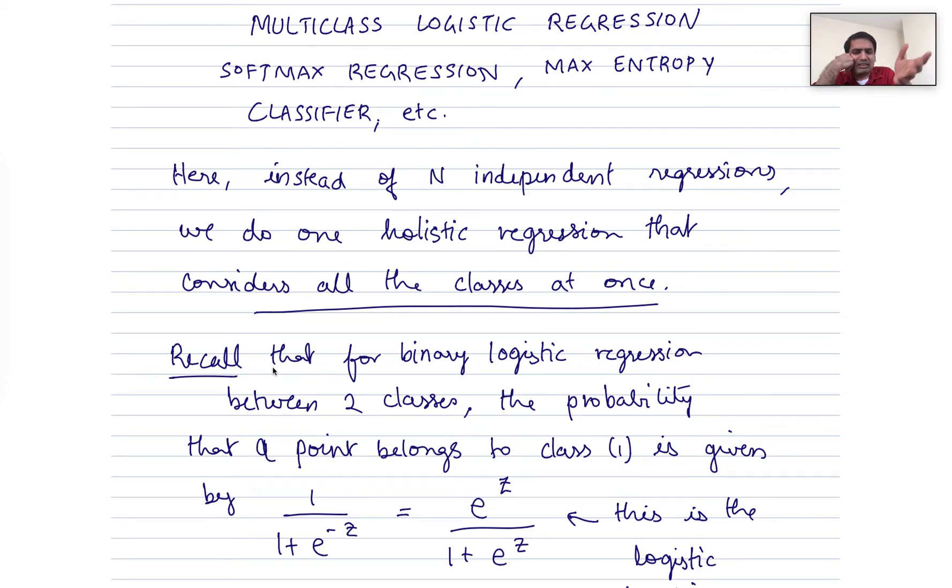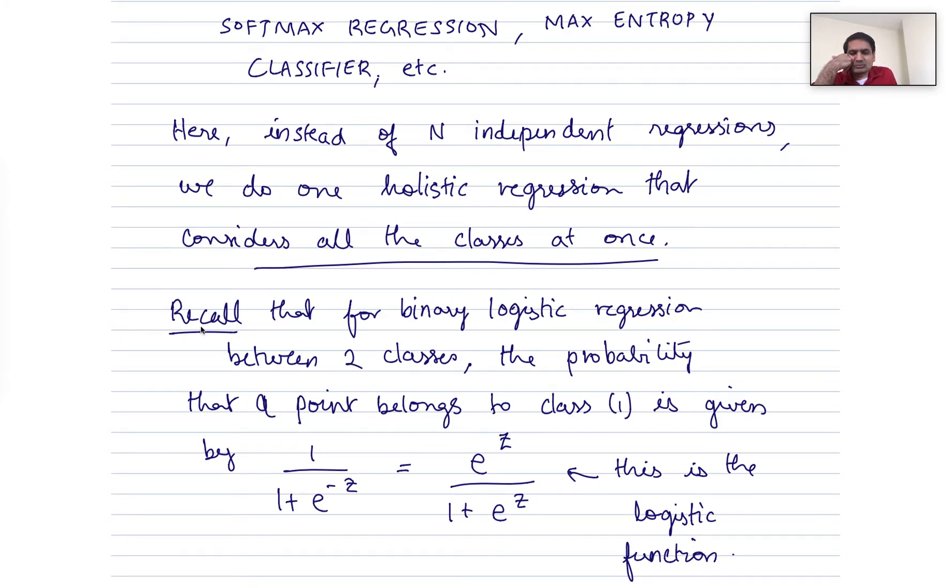Again, it's a kind of generalization of the binary logistic regression. So let's see how it is a generalization. Recall that for binary logistic regression between two classes, the probability that a point belongs to class one is given by essentially the logistic function, one over one plus e to the minus z, which can be rewritten in this form. Sometimes people write it in this form, sometimes in this form. For the purposes of this particular segment, it turns out it's convenient to write it in this form.